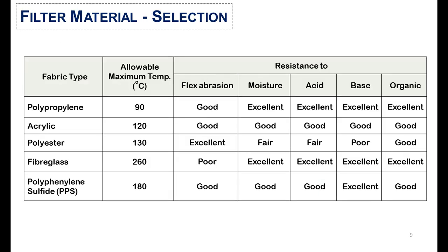Here is the selection criteria for filter material. The fabric type depends upon the allowable maximum temperature and the contamination of the dirty gas. If the service temperature is low — say up to 90°C — then polypropylene fiber type is selected, because it shows good resistance to moisture, acid, base, and organics.